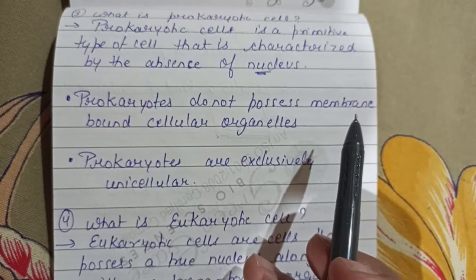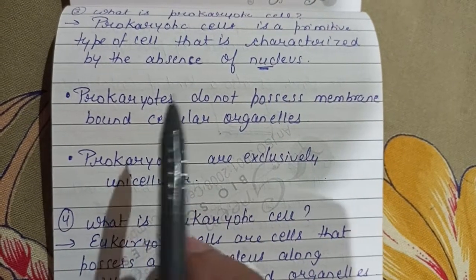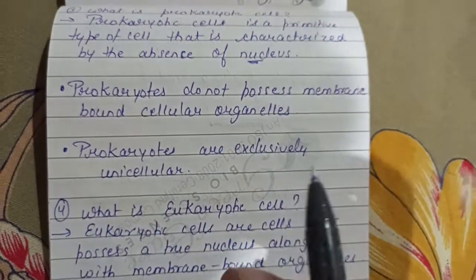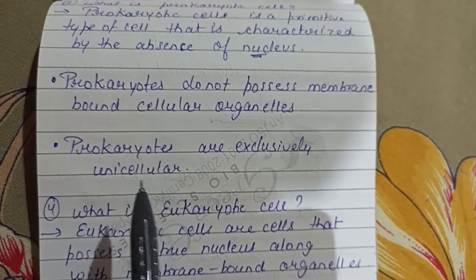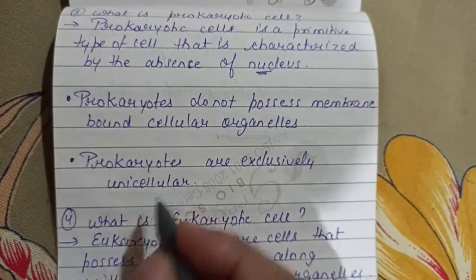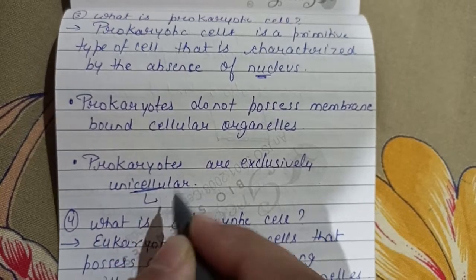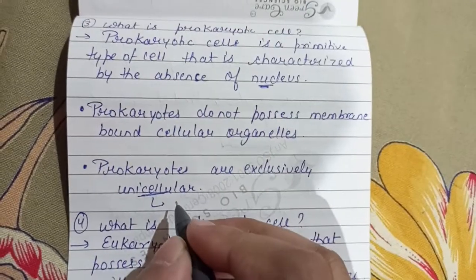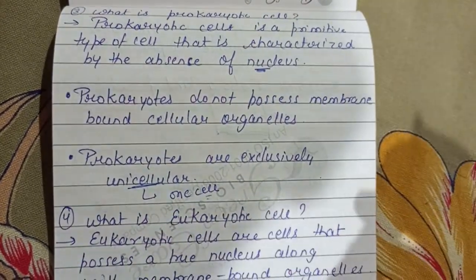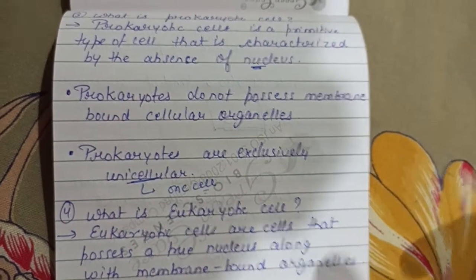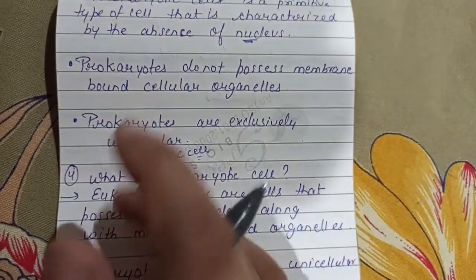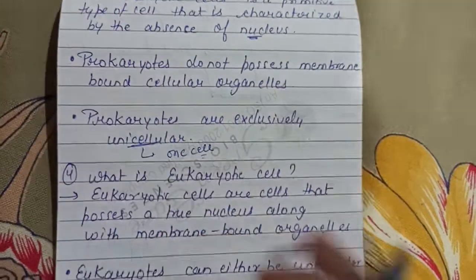Prokaryotes do not possess membrane-bound cellular organelles. Prokaryotes are exclusively unicellular, meaning their body contains only one cell. Organisms whose body contains only one cell are referred to as prokaryotes.